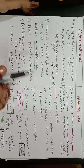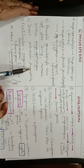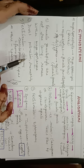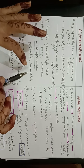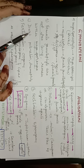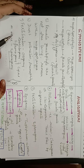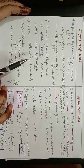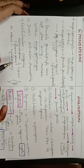Regarding pollination in gymnosperms: direct pollination and anemophily are found. Direct pollination is when pollen grains directly fall on the micropyle of the ovule — since ovary is absent. Anemophily is wind pollination.